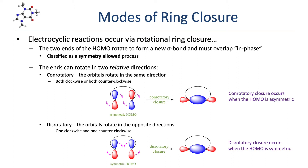The two ends of the HOMO can rotate in two relative directions. In a conrotatory ring closure, the two ends rotate in the same direction — both clockwise or both counterclockwise. Conrotatory ring closure occurs when the HOMO is asymmetric. Here we see a simplified depiction of an asymmetric HOMO reacting with conrotatory ring closure. Each orbital rotates 90 degrees in the same direction, bringing the blue orbital lobes together, representing an in-phase overlap.